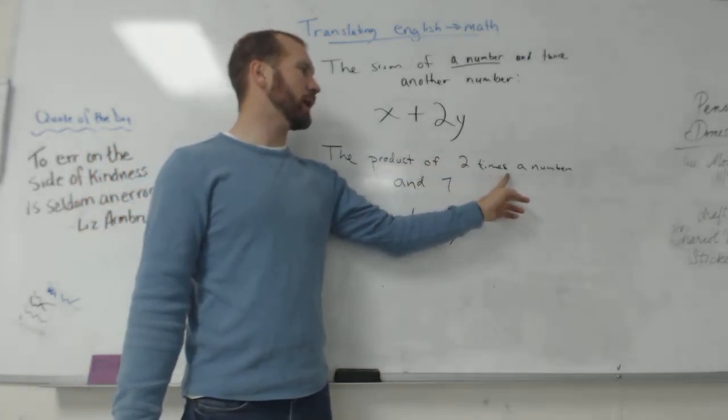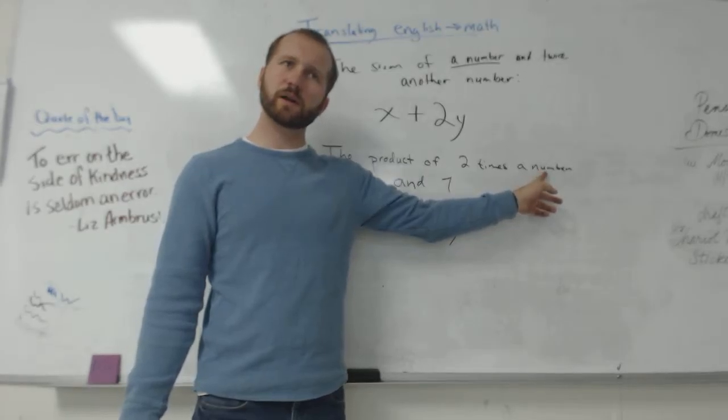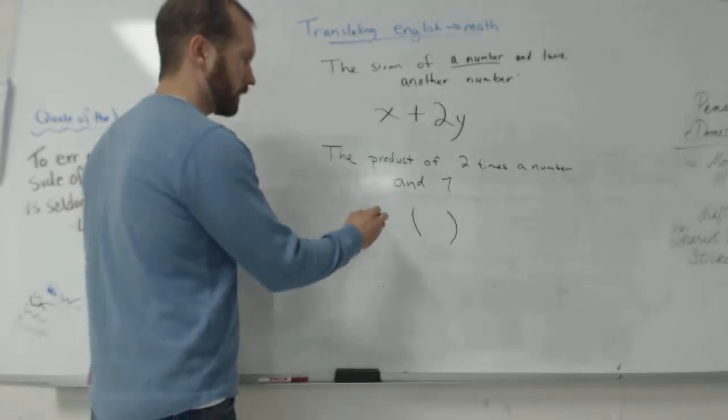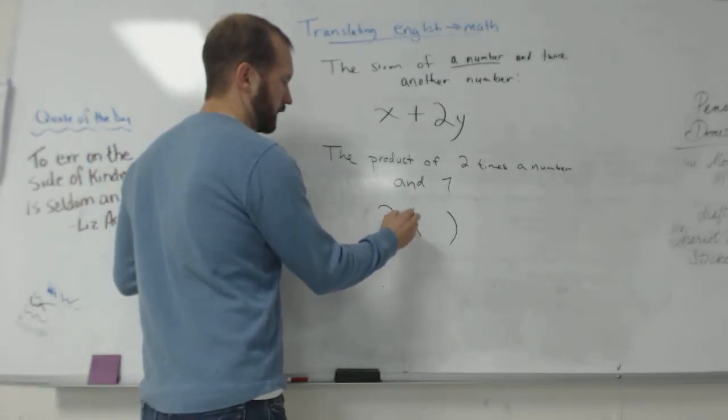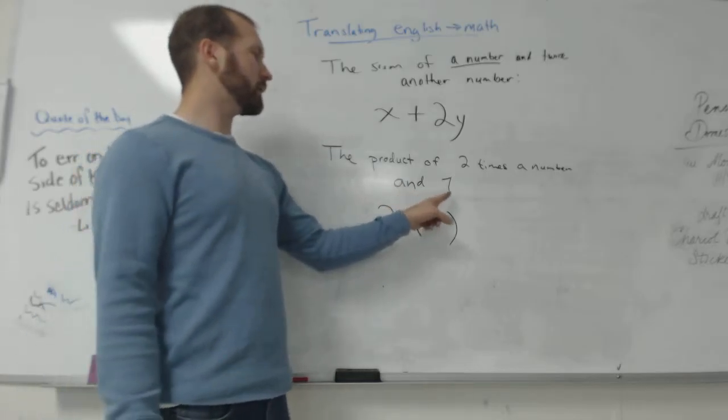Product of 2 times a number. How would I write 2 times a number? 2 and then X inside the parenthesis. 2X. And 7.